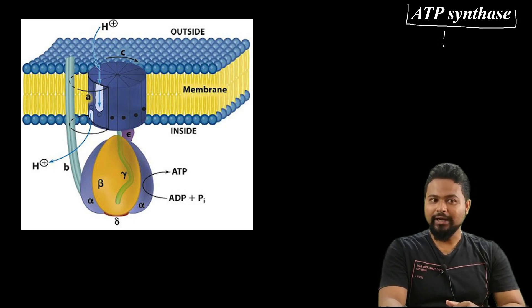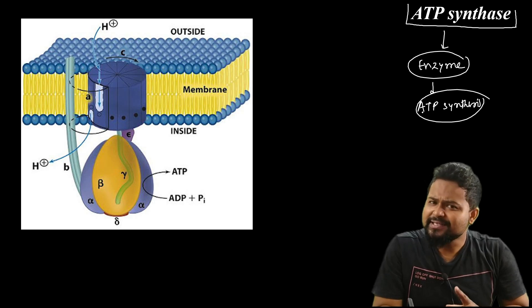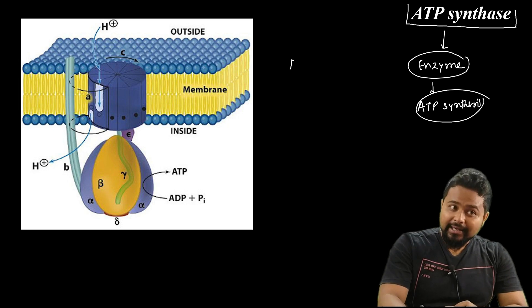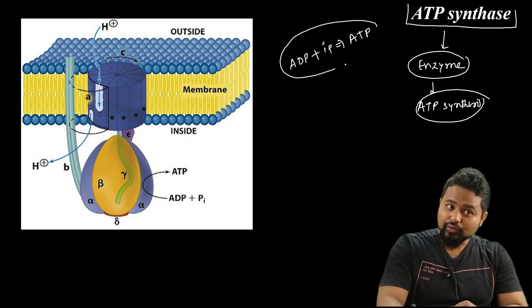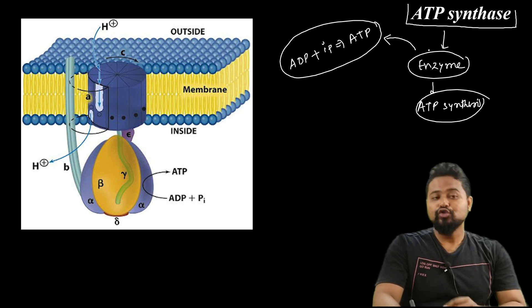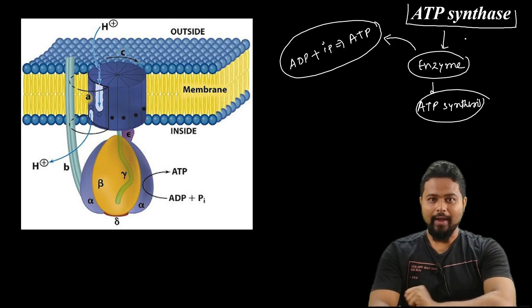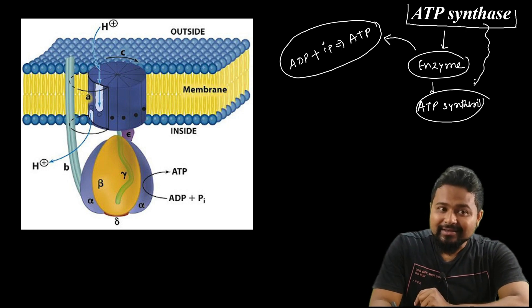ATP synthase is an enzyme. This enzyme is called ATP synthase because it catalyzes the reaction where ADP and inorganic phosphate combine to form ATP. 'Synthase' means it performs synthesis.